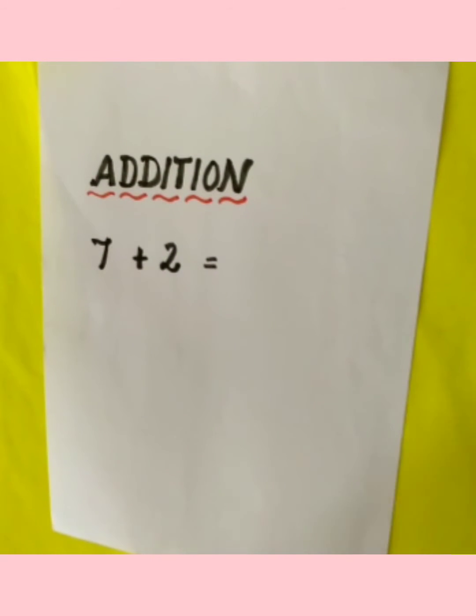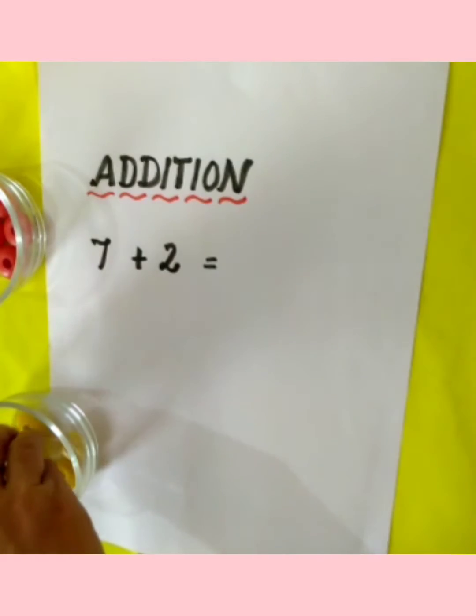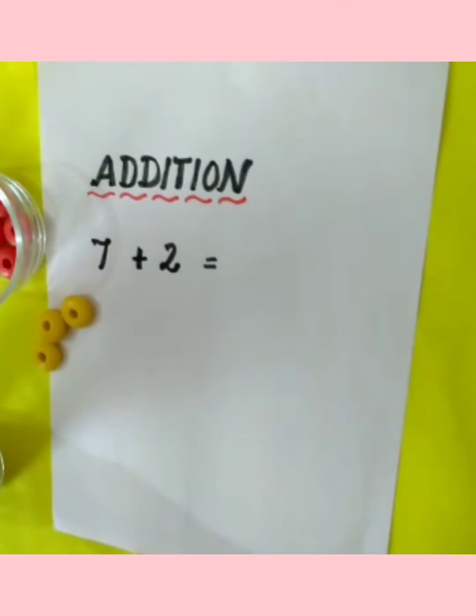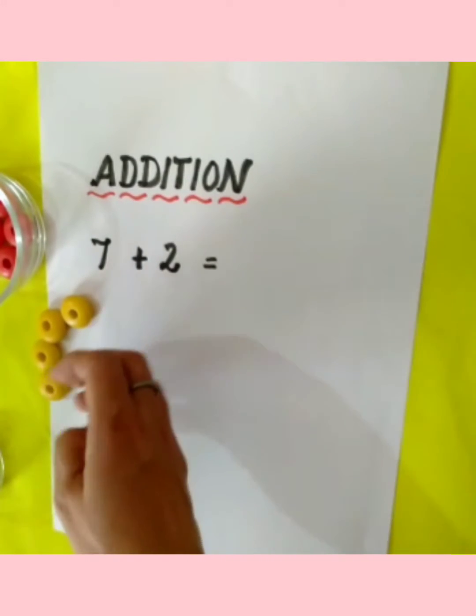I have two colored beads, yellow and red. I have taken different colored beads so that you will not get confused. So we will count seven yellow colored beads to represent seven.